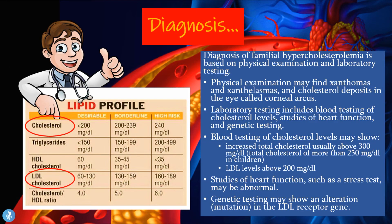Diagnosis of familial hypercholesterolemia is based on physical examination as well as laboratory testing. The physical examination may find xanthomas, xanthalasmas, and cholesterol deposits in the eye called the corneal arcus. Laboratory testing will include blood testing of cholesterol levels, studies of heart function, and genetic testing.